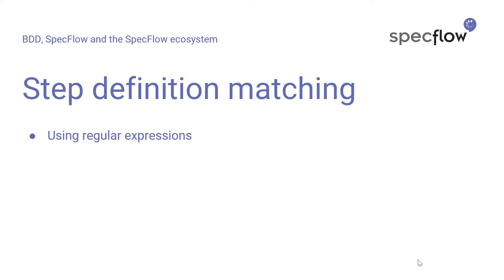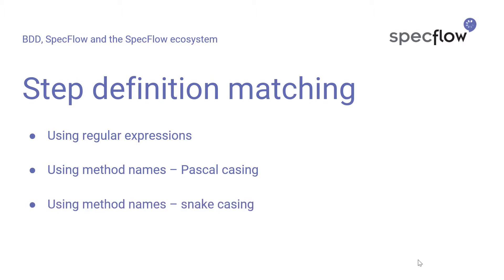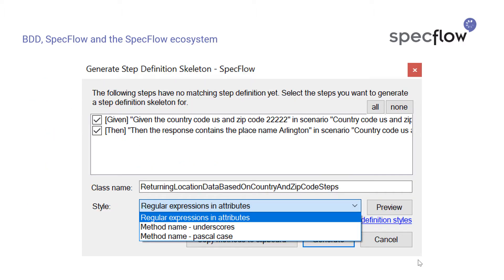The first one, and by far the most often used method, is by using regular expressions, and this is also the step definition matching method you'll see in this video. The other two techniques are: using method names with Pascal casing, where every word in a step is capitalized; and the third uses snake casing, where all words are written in lowercase and separated by underscores. In this video we're going to use regular expressions because that's by far the most powerful and versatile way of step definition matching that SpecFlow has to offer.